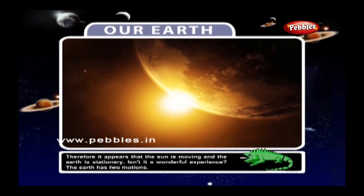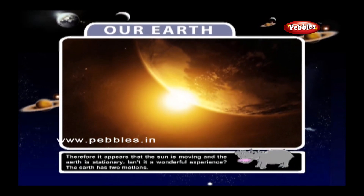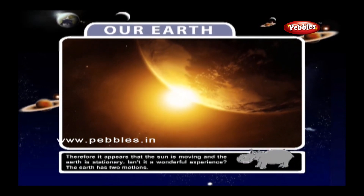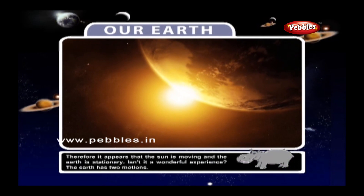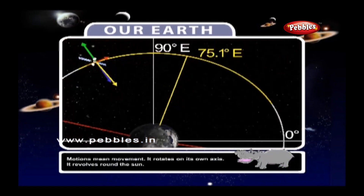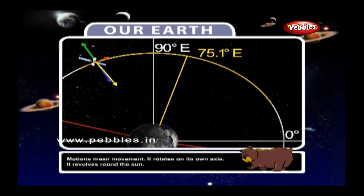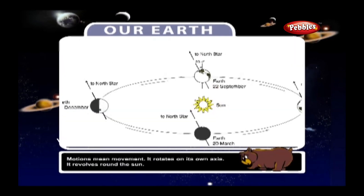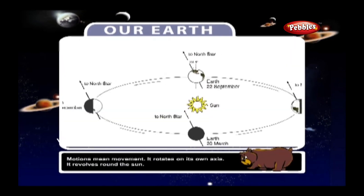Isn't it a wonderful experience? The Earth has two motions — motion means movement. It rotates on its own axis, and it revolves round the Sun.